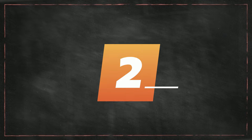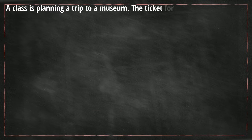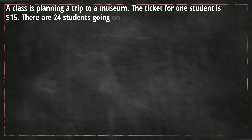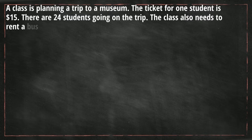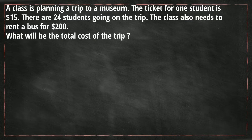A class is planning a trip to a museum. The ticket for one student costs $15, and there are 24 students going on the trip. The class also needs to rent a bus for $200. What would be the total cost of the trip?